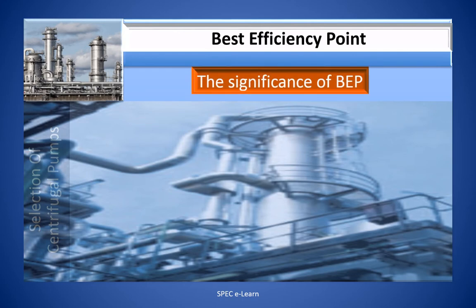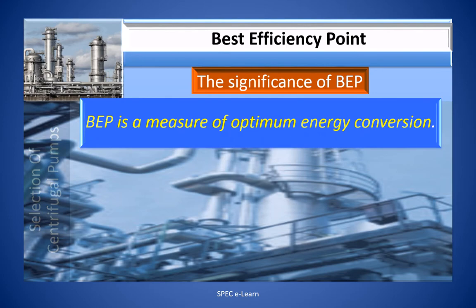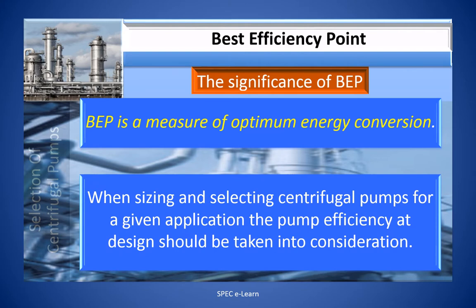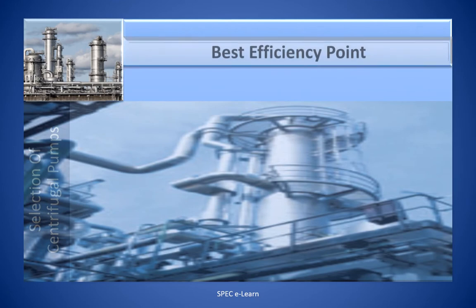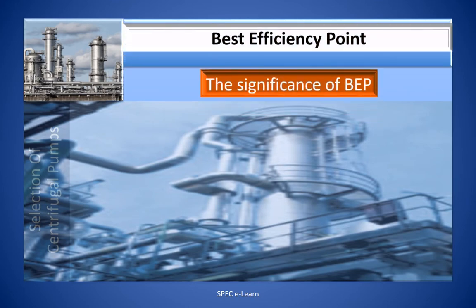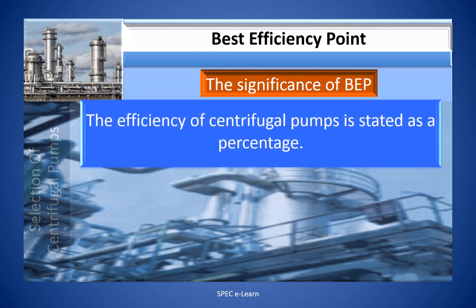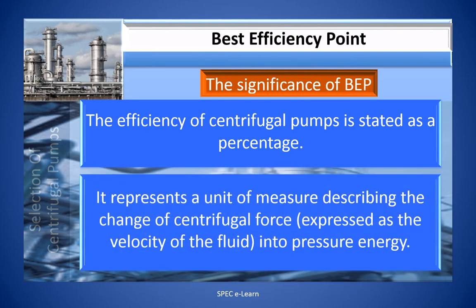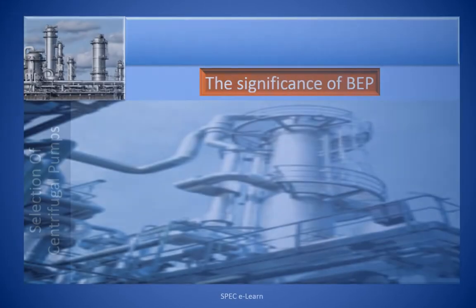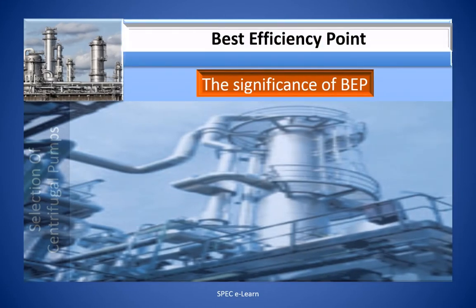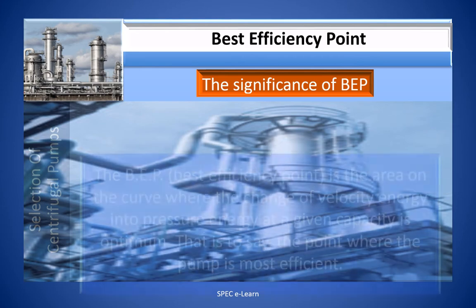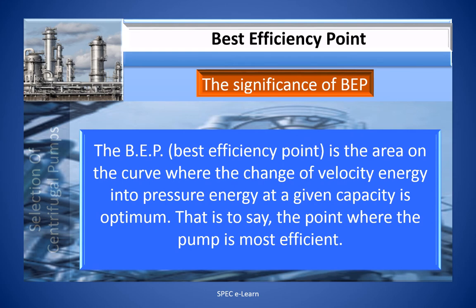BEP is a measure of optimum energy conversion. When sizing and selecting centrifugal pumps for a given application, the pump efficiency at design should be taken into consideration. The efficiency of centrifugal pumps is stated as a percentage, representing the change of centrifugal force — expressed as the velocity of the fluid — into pressure energy. The best efficiency point is the area on the curve where this conversion at a given capacity is optimum; in other words, BEP is the point where the pump is most efficient.